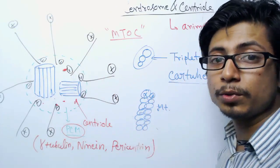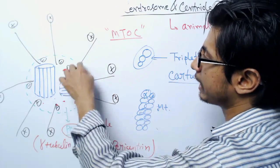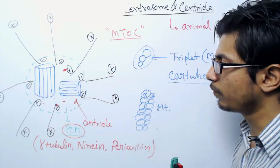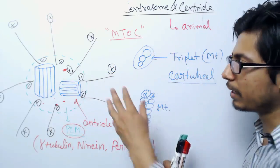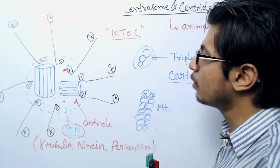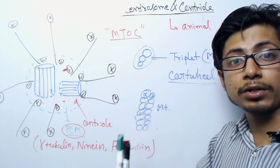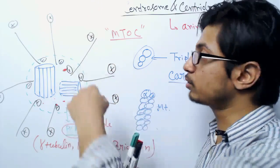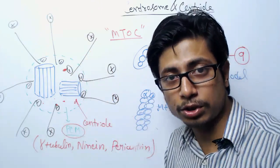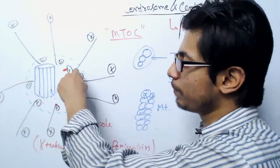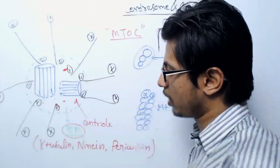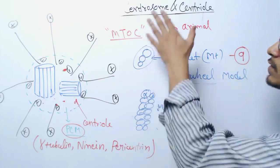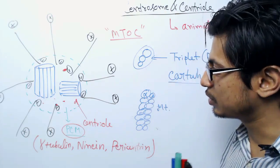Microtubules have a negative end and a positive end. The minus end is where microtubules get dissociated, while the plus end is where microtubules get associated. New tubulin dimers are added from the plus end, and dissociation of tubulins starts from the minus end.